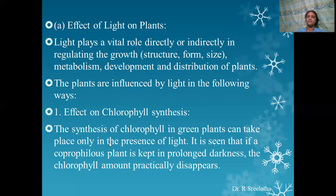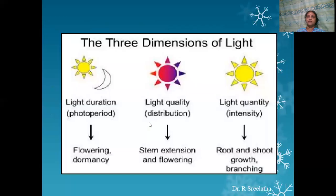Effect on chlorophyll synthesis: the synthesis of chlorophyll in green plants can take place only in the presence of light. It is seen that if a plant is kept in prolonged darkness, the amount of chlorophyll practically disappears. When we take light as a climatic factor, we have to learn about its three major dimensions which affect plant growth: the duration of light, called the photoperiod; the quality of light, that is its distribution; and the quantity of light, that is its intensity.